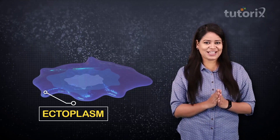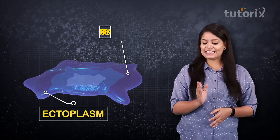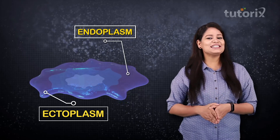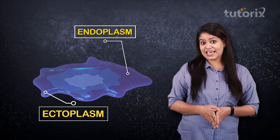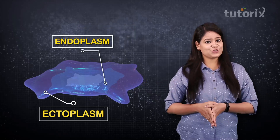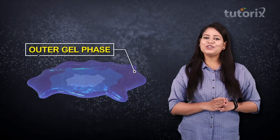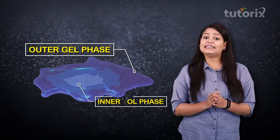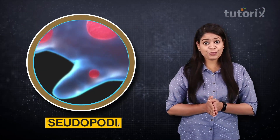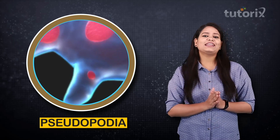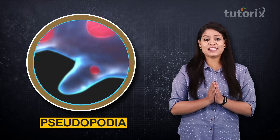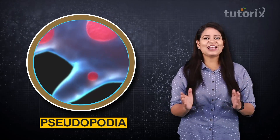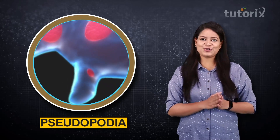Amoeba has a very special kind of cytoplasm with two regions: the outer fine region known as ectoplasm and the inner granular region known as endoplasm. The endoplasm further occurs in two phases: the outer gel phase and the inner sol phase. These complex cytoplasmic regions actually help in the formation of pseudopodia.